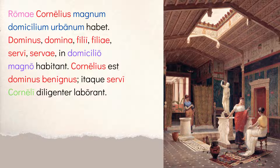Then it continues: Dominus, domina, filii, filiae, servi, servae in domicilio magno habitant. You have a bunch of subjects — the master, the mistress, the sons, the daughters, the slave men, and the slave women — they all habitant, they live in domicilio magno, in the large house. Notice magno is describing domicilio; you can see how the endings match. In this case they're both neuter ablative singular, so they're both using the O ending.